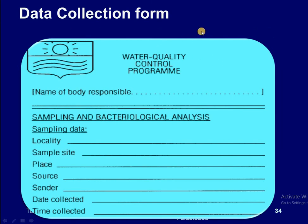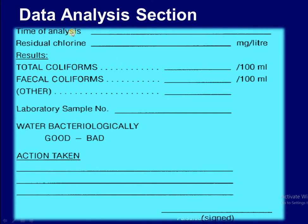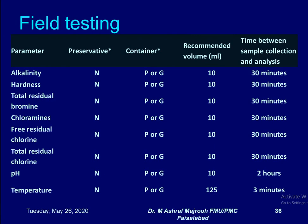A data collection form must be included, consisting of: sampling date, locality, sample size, place, source, sender, date and time of collection. An analysis sheet must indicate the time of analysis, residual chlorine, and other results of the tested sample. Some testings are done in the field, including alkalinity, hardness, total residual bromine, chloramines, free residual chlorine, total residual chlorine, pH, and temperature. No preservative is usually required for field testing.